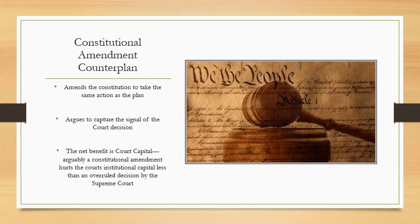The net benefit to this counter-plan is court capital. A constitutional amendment arguably hurts the court's institutional capital less than an overruled decision by the Supreme Court — if the court reverses itself, it looks bad and loses institutional capital. However, there's an argument that the counter-plan links to its own net benefit, because a constitutional amendment overruling the courts makes the court look silly — the entire Congress and two-thirds of states saying you're so out of touch we have to overrule you with a constitutional amendment.